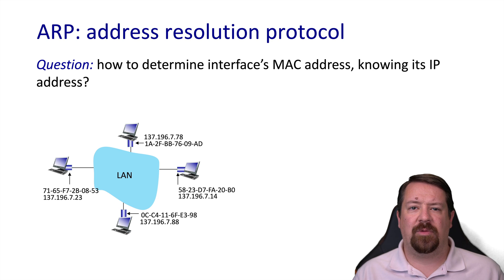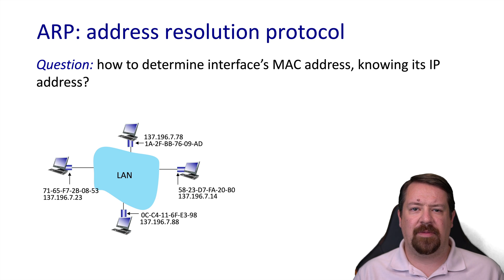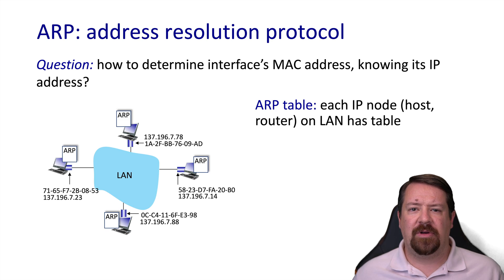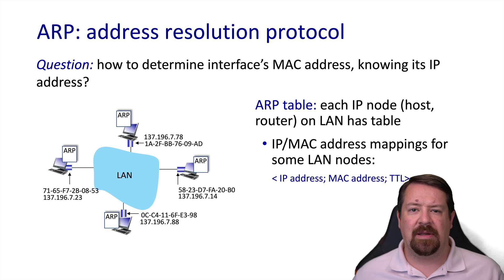Our next problem is how do we find out what MAC address to use as a destination in a frame? The device knows its own MAC address for the source field, and DNS can provide the destination IP address. But how does it find the MAC address for the destination field of the layer 2 frame? That relies on ARP, the address resolution protocol — another distributed database lookup that maps from an IP address to a MAC address. Every node on a network must maintain an ARP table of IP-to-MAC address pairs, with a TTL after which entries are considered stale and removed.